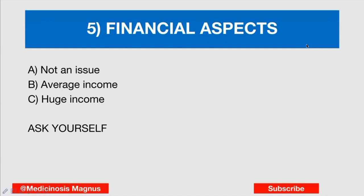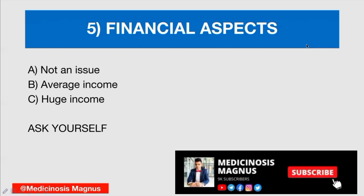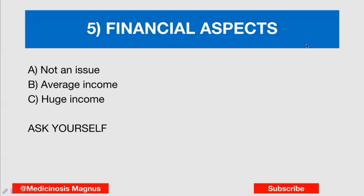If you think about all five things — interests, work environment, strong areas, weak areas, and financial aspects — write down all the points about yourself, then list the specialties that suit you and rule out each one. Finally, you will be left with two or three specialties, and you will choose the one that suits you best. Drop your answers in the comment section. Thank you everyone, don't forget to subscribe.